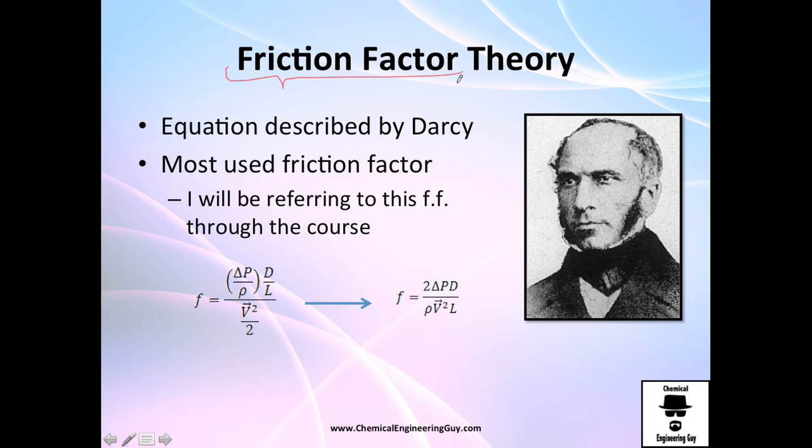What's the friction factor, that F value I showed before? It's a factor calculated by scientists. Darcy made his own friction factor definition. I will be using this factor along all the course, so please pay attention. Friction factor by definition is the pressure drop divided by the density times the diameter divided by the length and the square of the velocity. Or, if you order it, you get 2 times the pressure drop times the diameter divided by the density, velocity squared, and length.